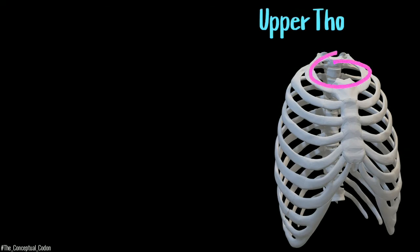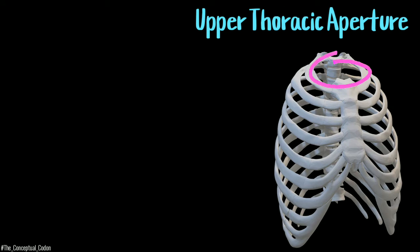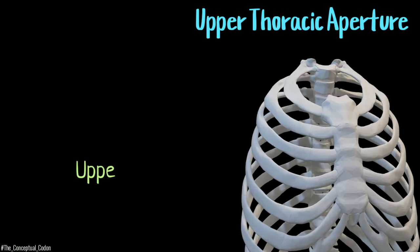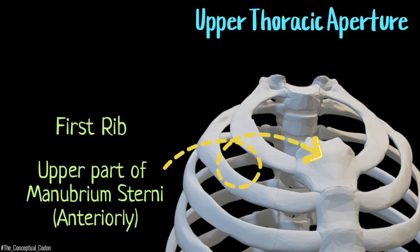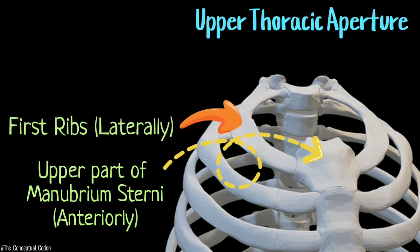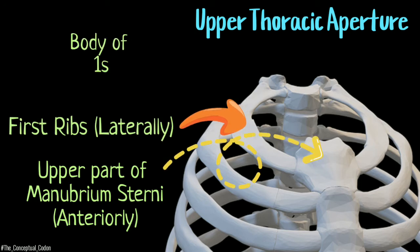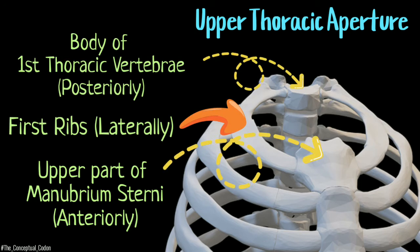The superior margin of the thoracic cavity is marked by the narrow thoracic aperture, which is bounded by the upper part of the manubrium sterni, the first ribs, and the body of the first thoracic vertebrae. This aperture is not closed by any structure.